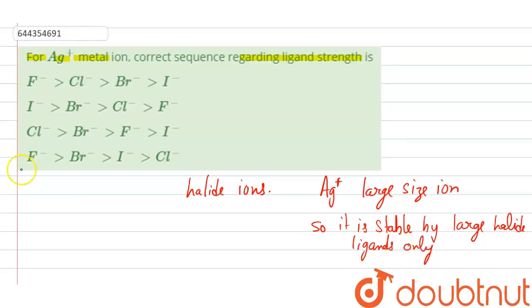That means it is stabilized by iodide ion, then bromide ion, then chloride ion, and the least by the fluoride ion because of the size. And the correct option is the second. Thank you.